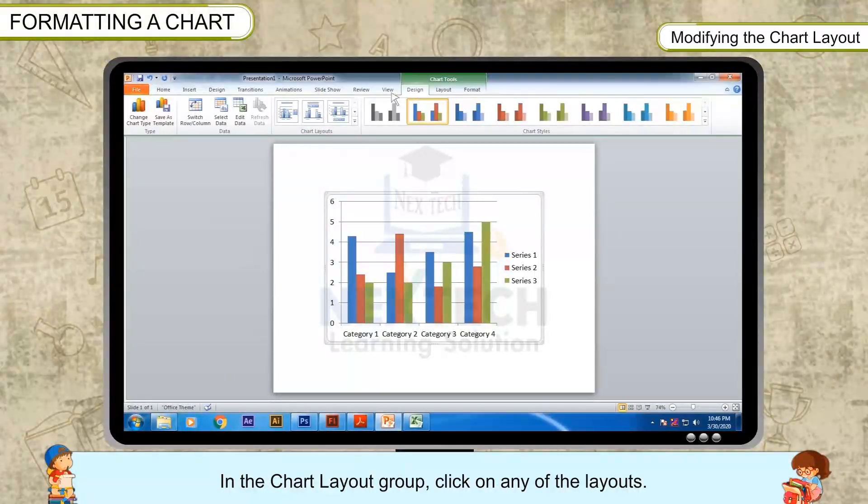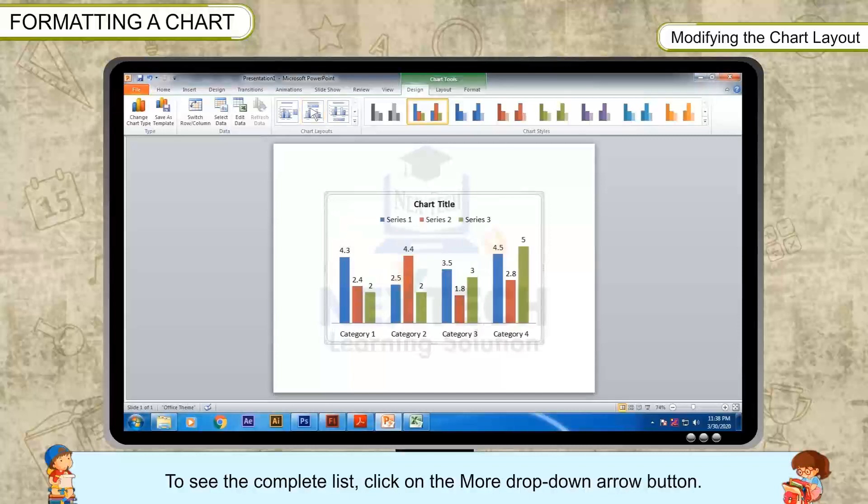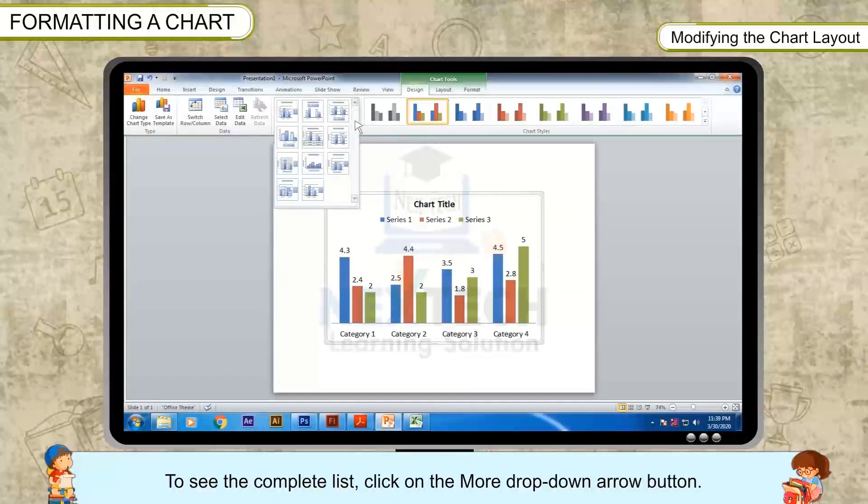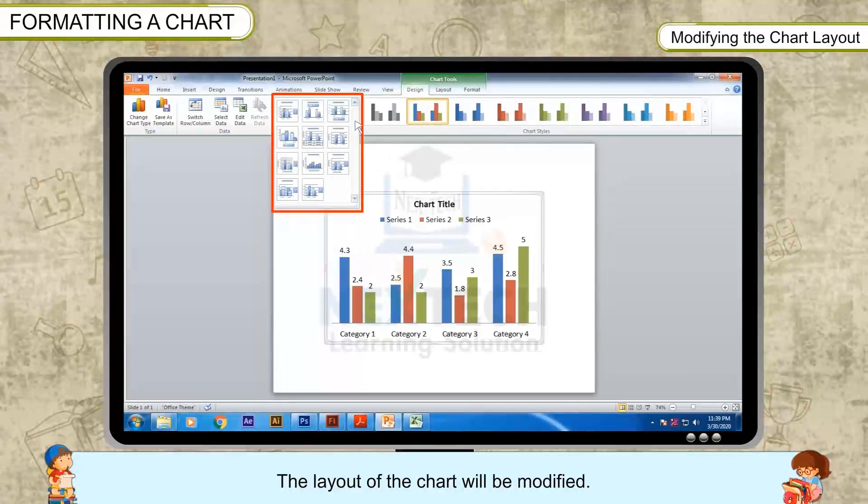In the Chart Layout group, click on any of the layouts. To see the complete list, click on the More drop-down arrow button. The layout of the chart will be modified.